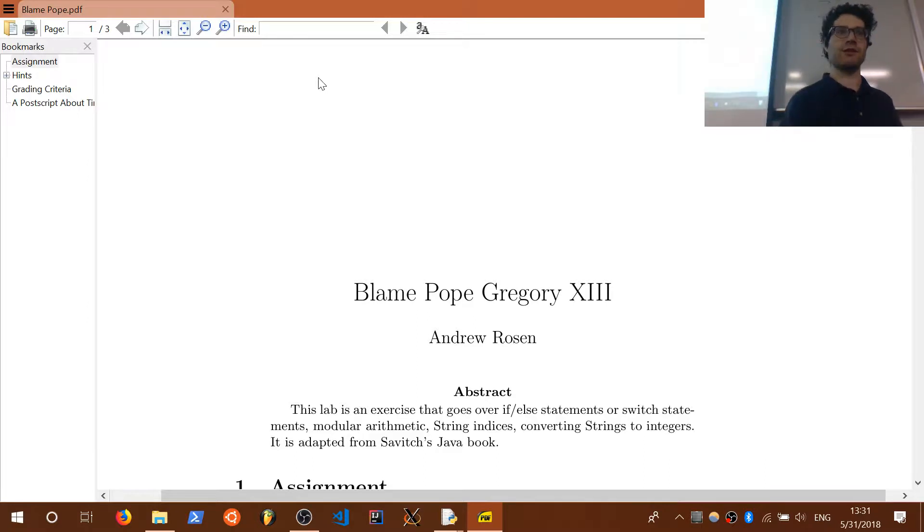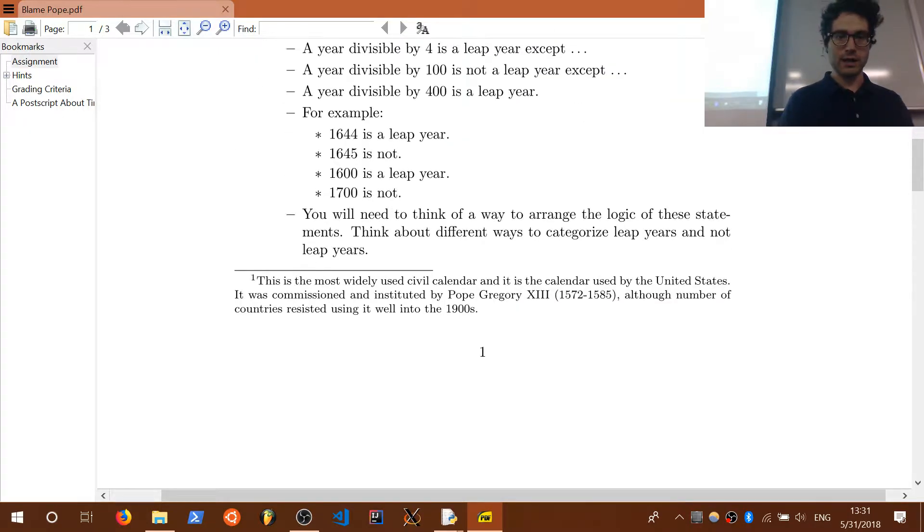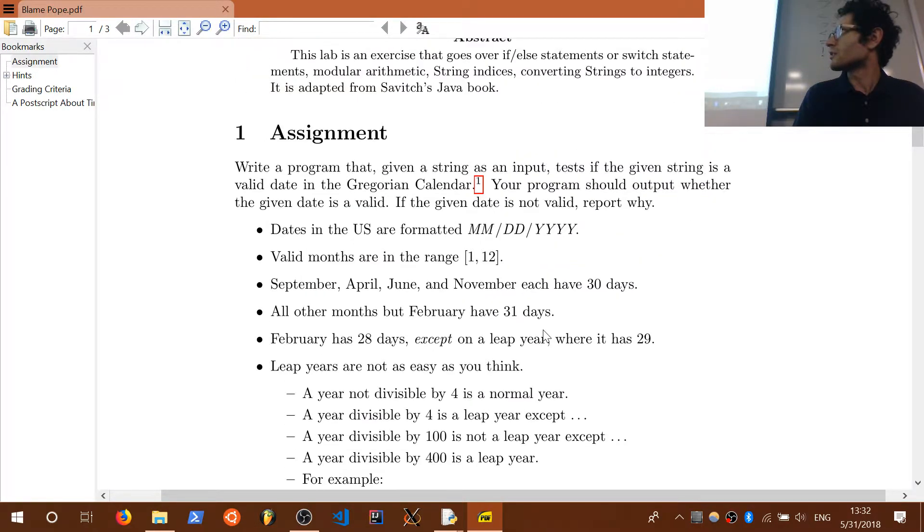So it's called Blame Pope Gregory XIII. If you read my footnote, the most widely used civil calendar in the United States is the Gregorian calendar, which succeeded the Julian calendar. It turns out the calendars had this problem with leap years and had to account for the fact that the rotation of the earth around the sun is not precisely 365 days. It was instituted by Pope Gregory XIII who served from 1572 for about 13 years. It was used for a while but a lot of countries didn't use it until the 1900s because of course the Protestant Reformation came after that. It was just a mess because why would we want to follow what the silly papists say? So it took a while for it to become a civil calendar rather than something that was just purely religious.